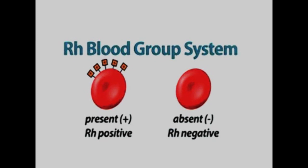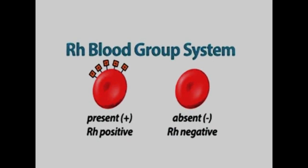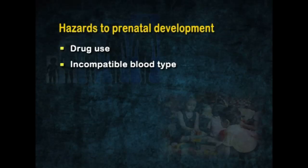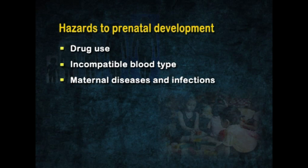If the RH marker is not present, the person is said to be RH negative. If a pregnant woman is RH negative and her partner is RH positive, the fetus may have RH positive blood. If the fetus's blood is RH positive and the mother's is RH negative, the mother's immune system may produce antibodies which will attack the fetus, making it a hazard for fetal development.